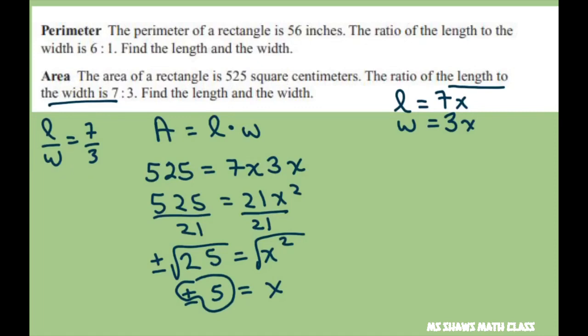So to find the length, we take length equals 7 times 5, which is 35, and the width is 3 times 5, which is 15.